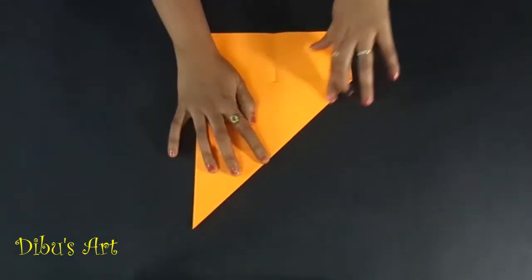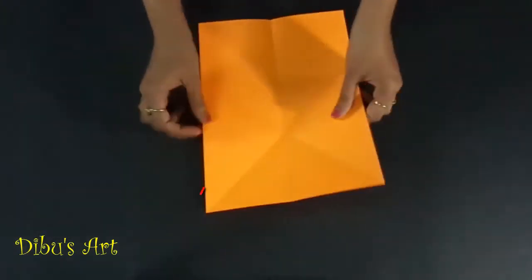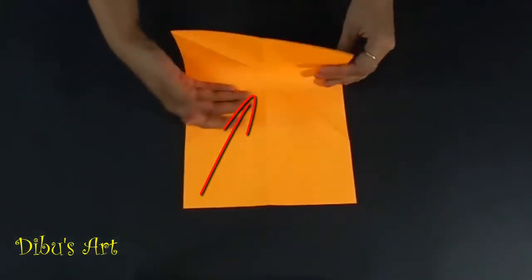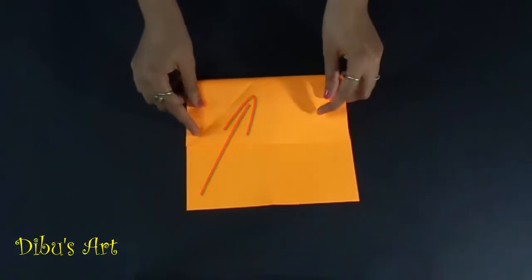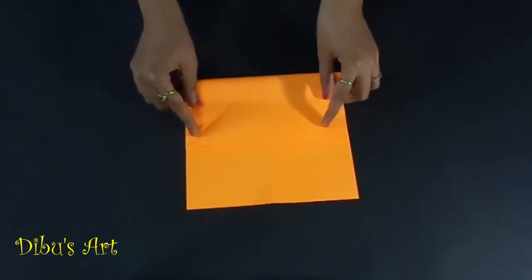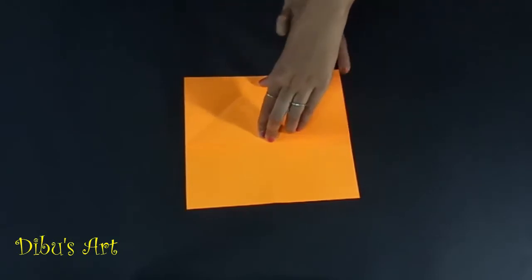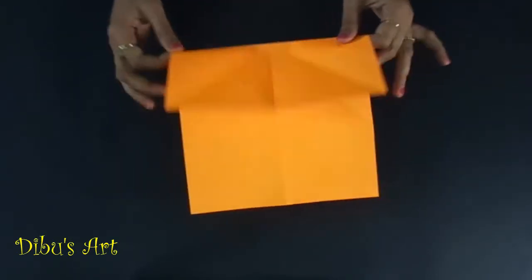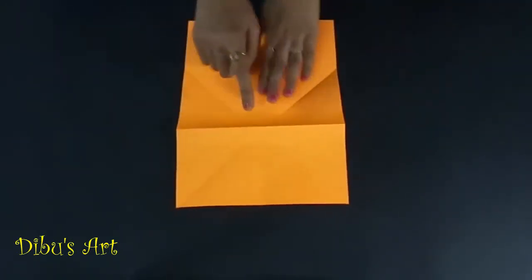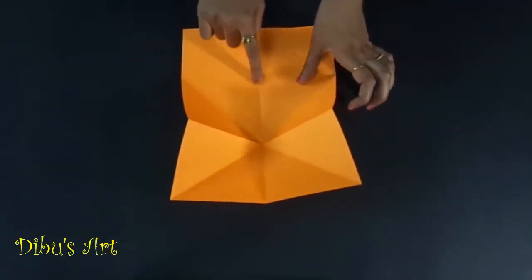Now all the three creases meet at a point on center line. Reverse the paper and fold the upper edge towards down edge until the markings made due to earlier folds. Now reverse the paper and push at the center point so that paper can fold according to the reference creases.